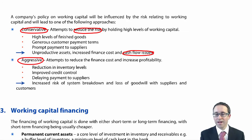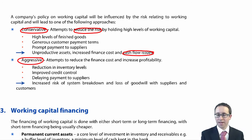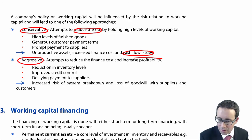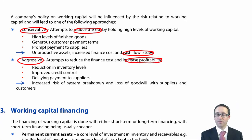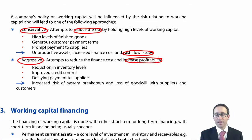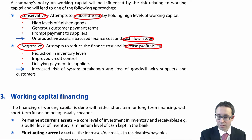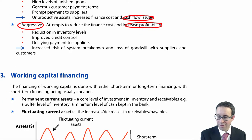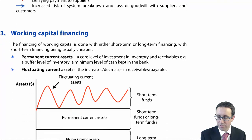An aggressive method adds a bit more risk, but by taking on more risk you increase profitability — reducing inventory, improving credit control and delaying payment to suppliers, but not so long that you run the risk of upsetting the supplier and losing goodwill. So you've got your working capital policy in terms of conservative and aggressive. How do we go through and finance it?